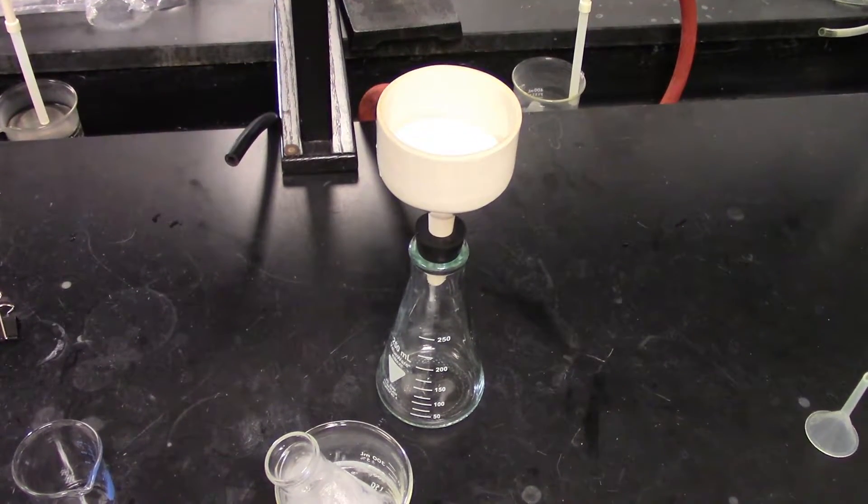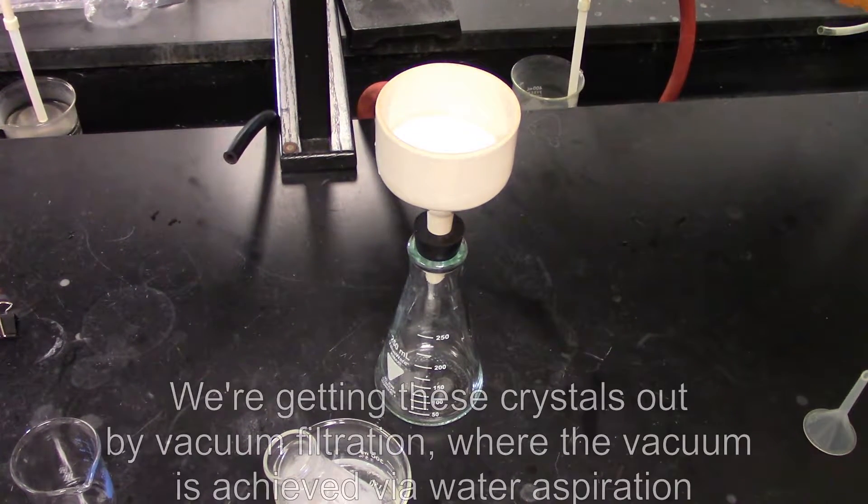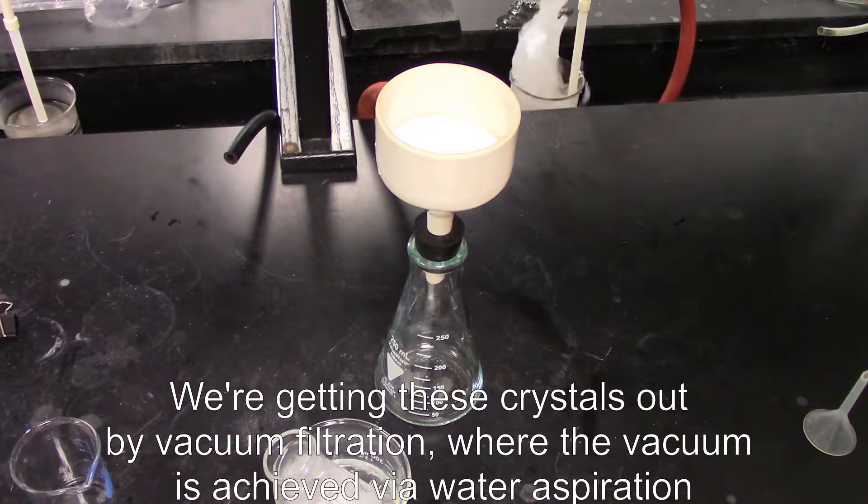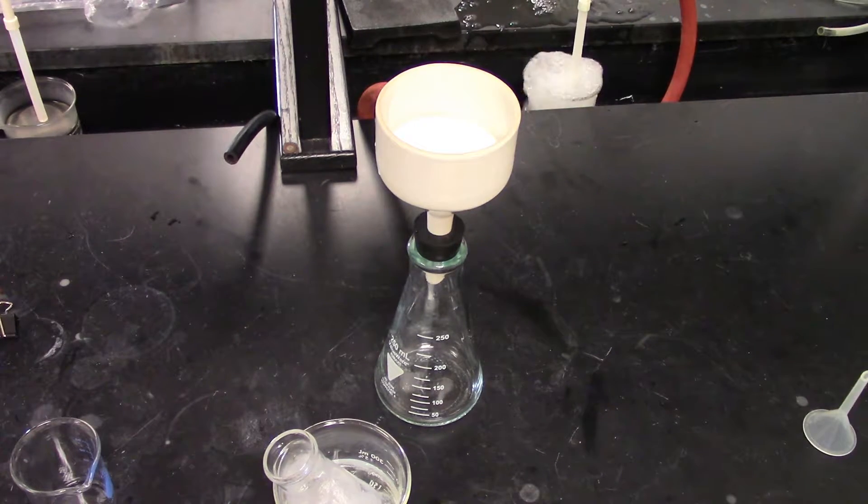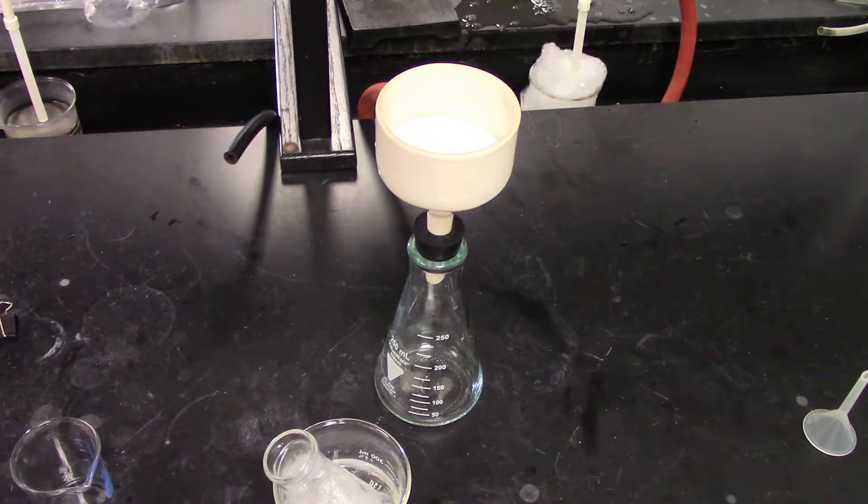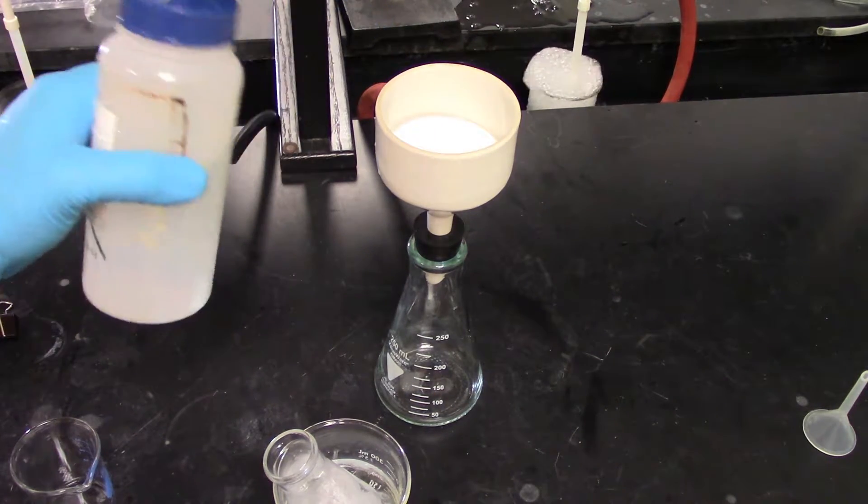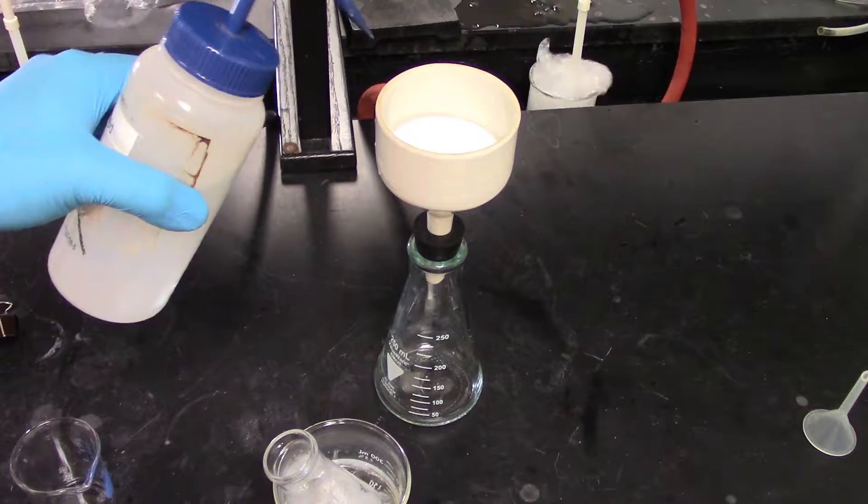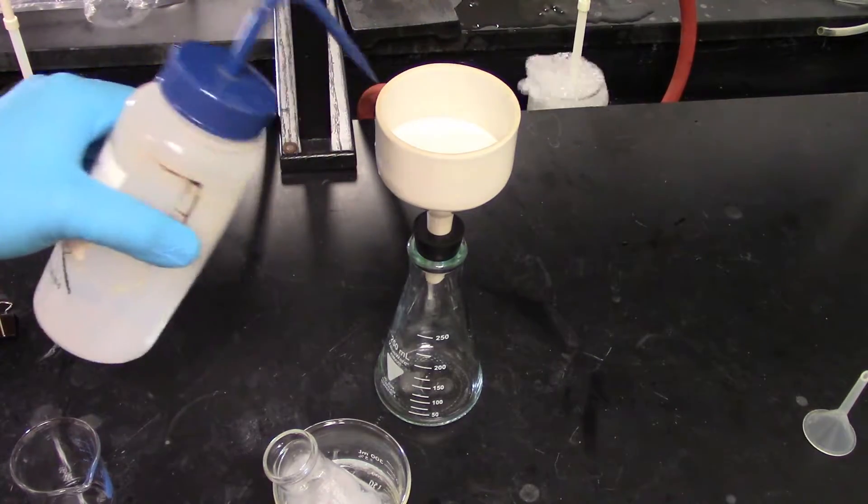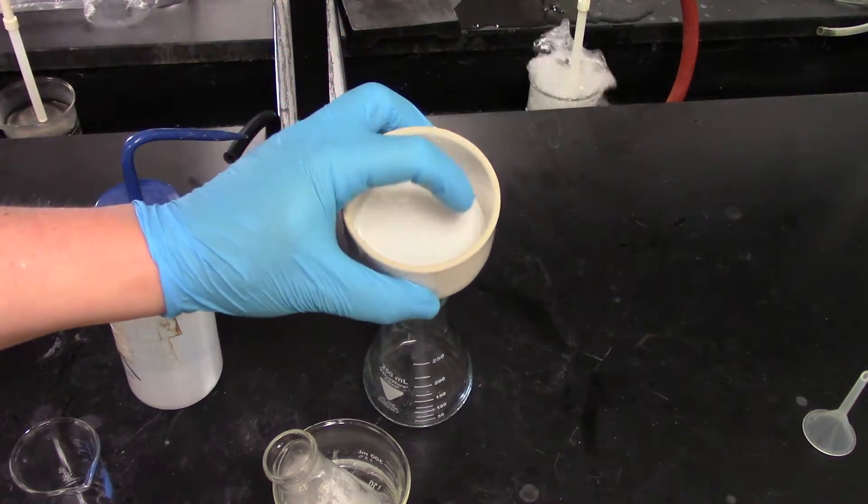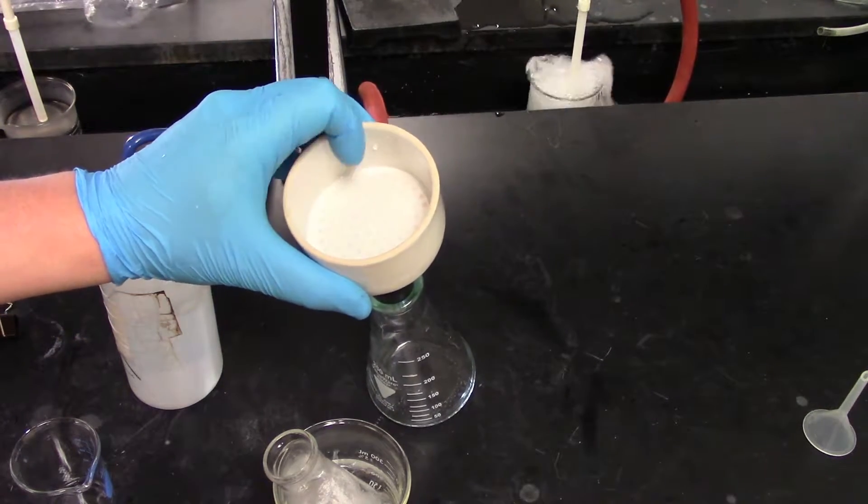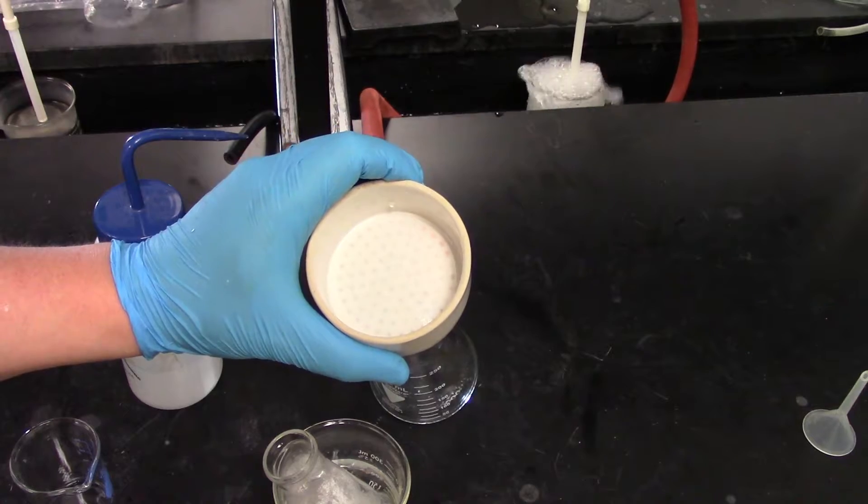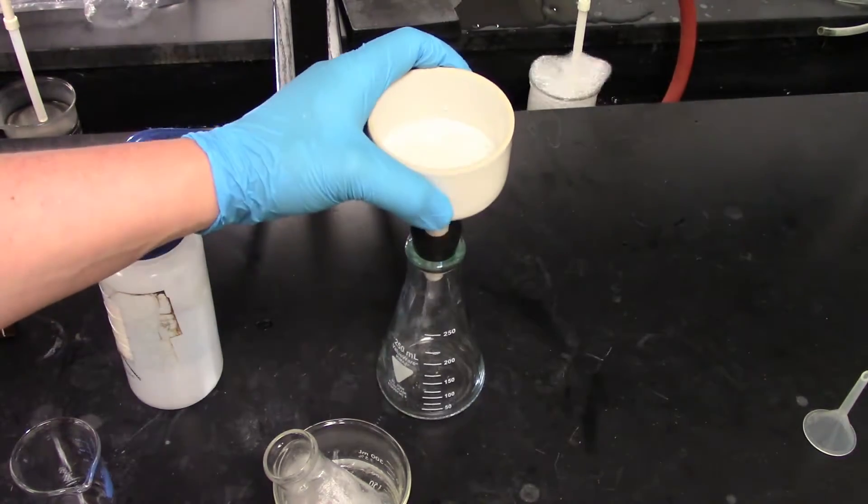What we're going to use in this case is water aspiration. It uses high water flow rates in order to create a cheap vacuum. For this I've got a pre-weighed piece of filter paper. I put it into the Buchner funnel, I'm going to get it nice and wet until it forms a seal. You can see now we're starting to draw the water through.